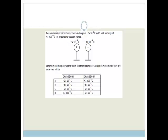Moving on. Now, two identical metal spheres X with a charge of minus 7 times 10 to the negative 6 coulombs and Y with positive 3 times 10 to the minus 6 coulombs are touched on wooden stands. Spheres X and Y are allowed to touch and then separated. The charge in X and Y after they are separated is what?